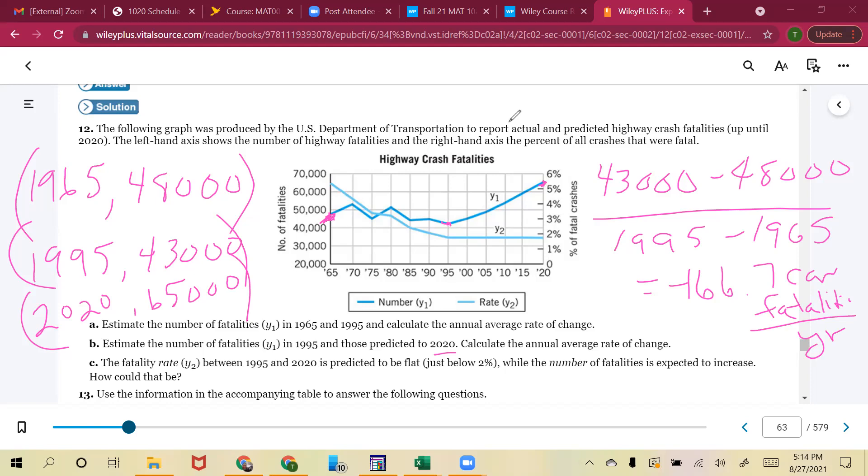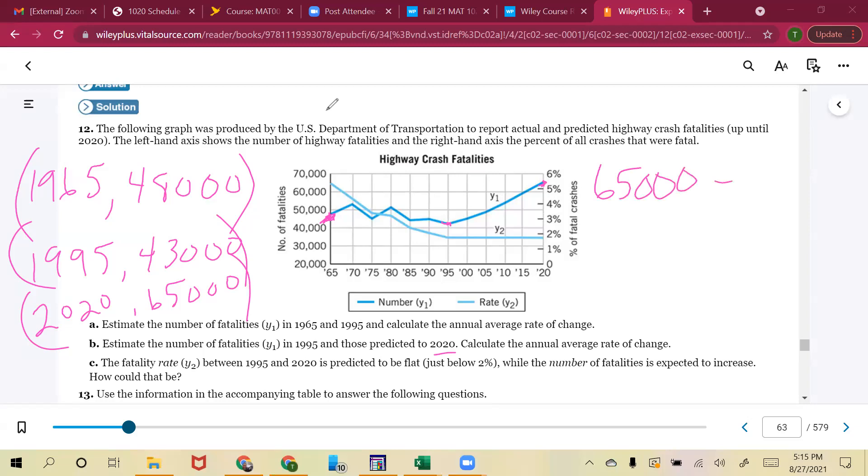Part B is going to ask us to do the same thing, but instead of 1965 and 1995, we're going to do 1995 and 2020. So let me erase this. The same thing, just changing my numbers here. So I'm going to do 65,000 minus 43,000. And I'm going to divide that by 2020 minus 1995. And that is going to give me, if I subtract and divide out, we're going to get 22,000 over 25, which is going to give us 880 car fatalities per year.